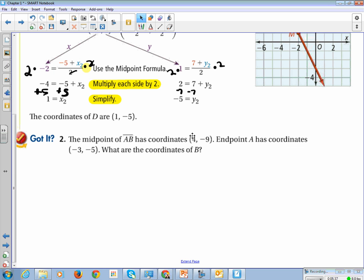The midpoint has coordinates 4, negative 9. The endpoint has, A has coordinates negative 3, 5. What are the coordinates of B? So we're going to, let's start with our x's. So 4 is equal to negative 3 plus our coordinate of our x-value, divided by 2.